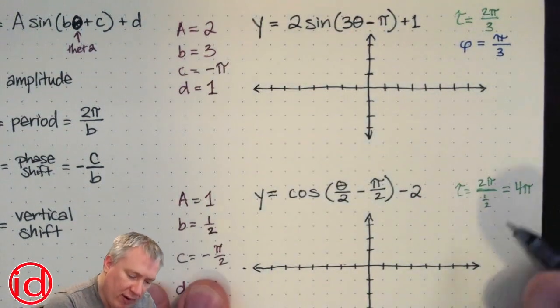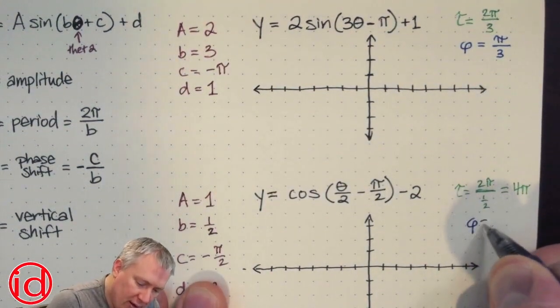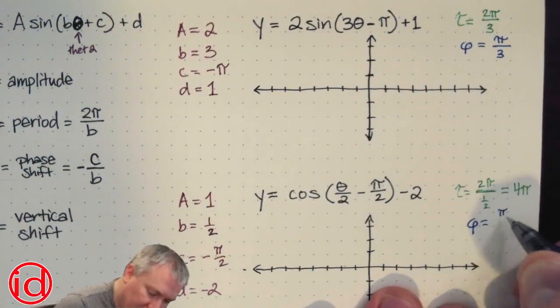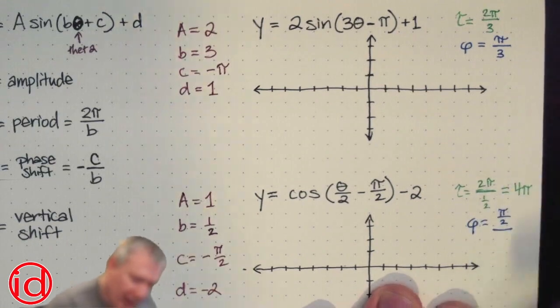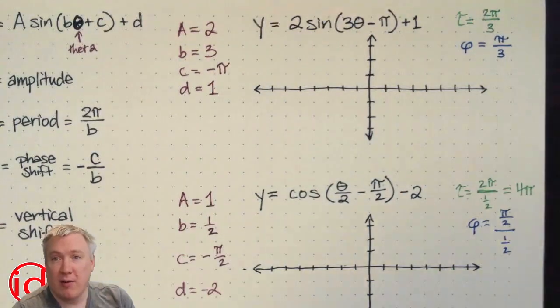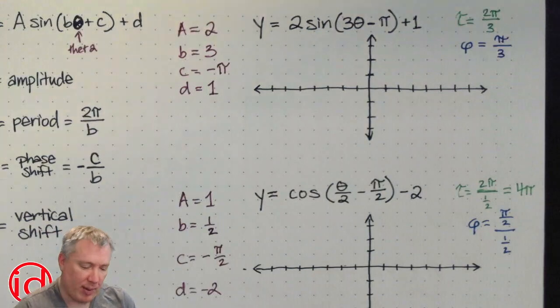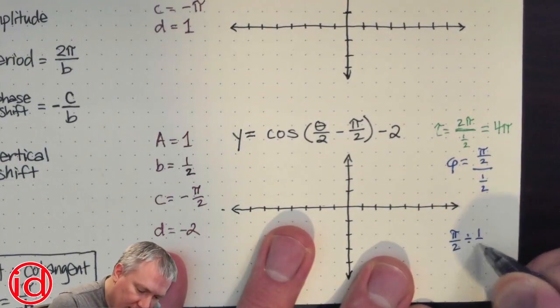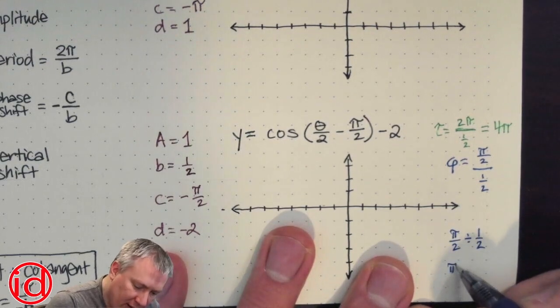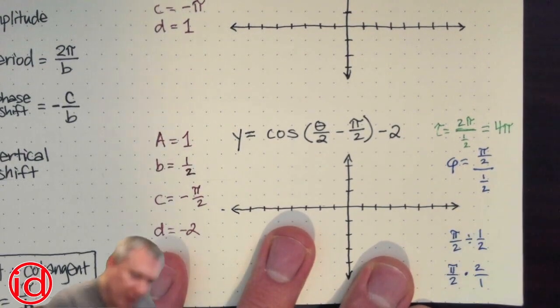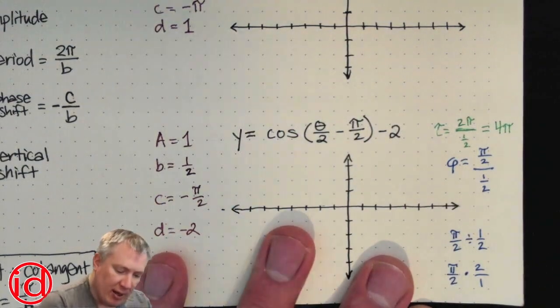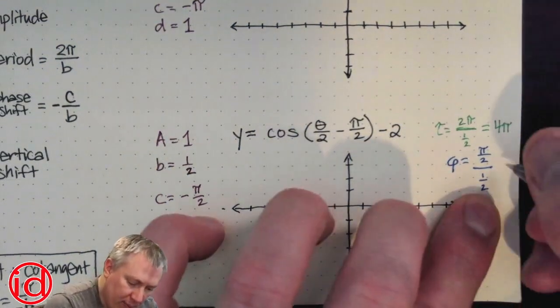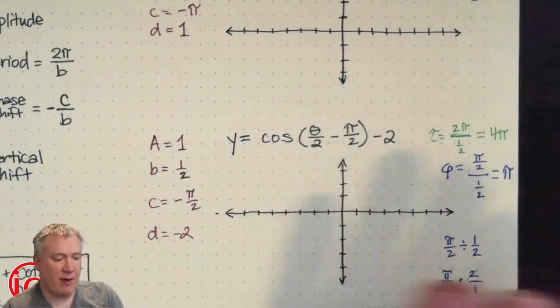So if I go down here, if I want phase shift, I'm going to have to take the opposite of c, which is π over 2 positive. And then I'm going to have to divide it by b, which is one half. But remember, dividing by a fraction, you're multiplying by the reciprocal. So take π over 2. And this is divided by one half. So that's the same as π over 2 times 2 over 1. And as soon as I do that, hopefully you see that those twos are going to cancel and you're just left with π over 1 or just π. So my phase shift here is π.